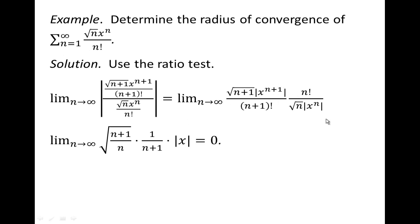the x to the n plus 1 divided by x to the n in absolute value just reduces to the absolute value of x. Okay, so that 1 over n plus 1 came from reducing the factorials. And there we have that square root.